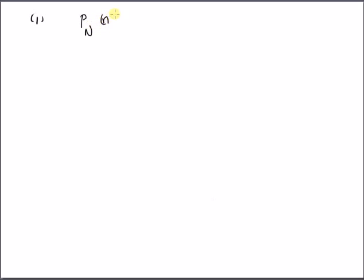Welcome. In this short video, let us look at some examples illustrating how to compute the normalizing constant of a probability mass function and also calculating different kinds of probabilities. The first example: we have a probability mass function defined as p_N(n) = c · (1/2)^n for n = 0, 1, and 2, and 0 otherwise.